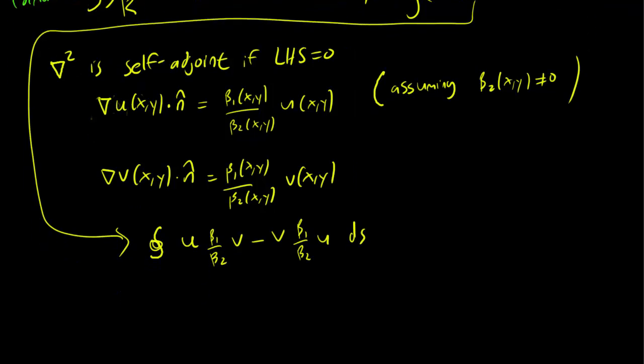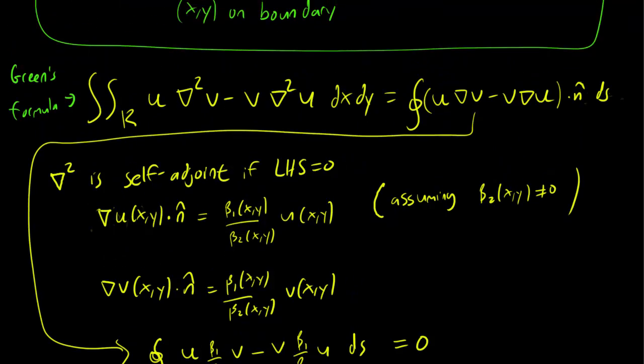But clearly, u beta 1 over beta 2 v is the same as v beta 1 over beta 2 u. So this is just equal to zero. And this implies that indeed, the Laplacian is self-adjoint, since we've shown that the right-hand side of the Green's formula is equal to zero.